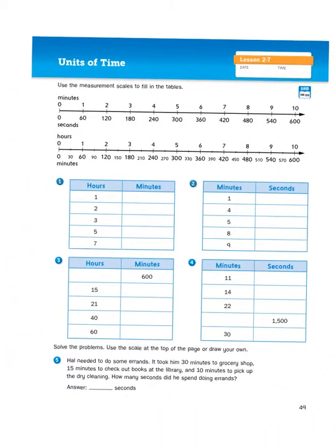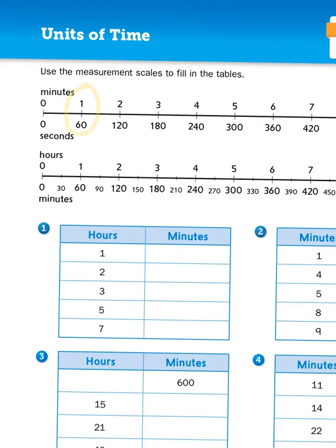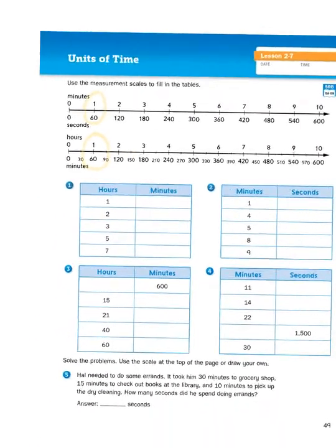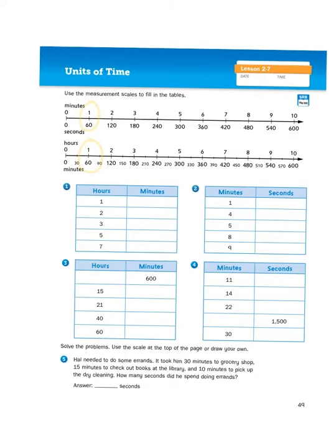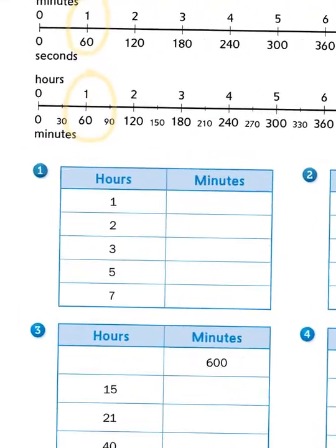Now you might be wondering, Mr. Wassman, we've been studying multiplication. Why, right in the middle of this unit, are we talking about time? Well, if you look at these measurement scales at the top of page 49, you'll notice that for every minute, that is the equivalent of 60 seconds, and for every hour, that's the equivalent of 60 minutes. The number 60 is very important when converting between units of time. So what we're doing when we convert from hours to minutes or minutes to seconds is we're multiplying by 60.